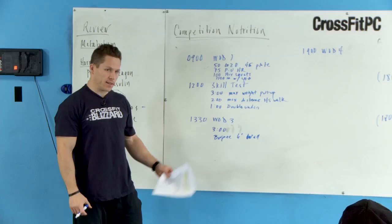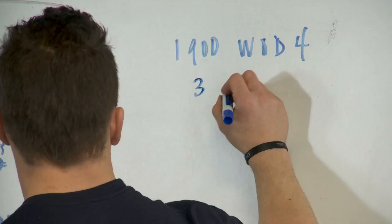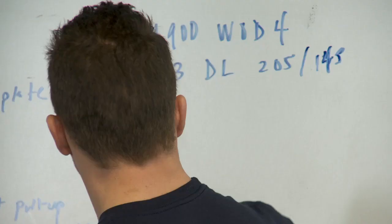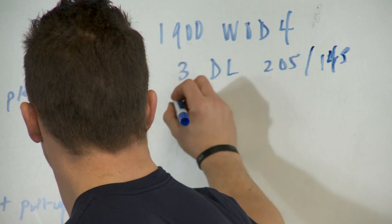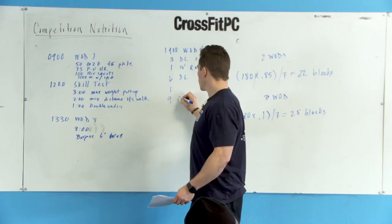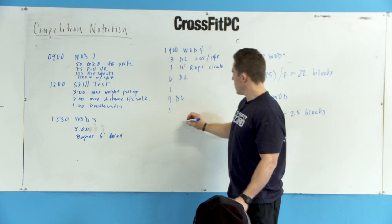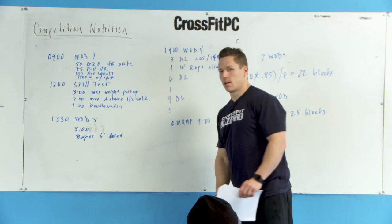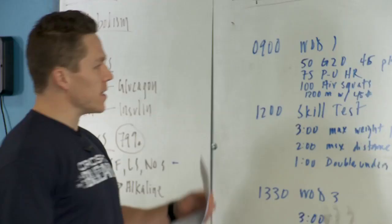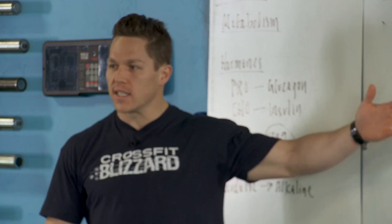Alright, workout number four, final workout, pretty cool little ladder: three fat bar deadlifts 205, okay there you go, 145, one 15 foot rope climb. Six deadlift, one rope climb. Nine deadlift, one rope climb. You get the idea. And that's AMRAP nine minutes. Simple enough. Demanding? Heck yeah. Now here's how we're going to base this. We've got 25 blocks a day that we know we need to take in in order to perform our best during this day.